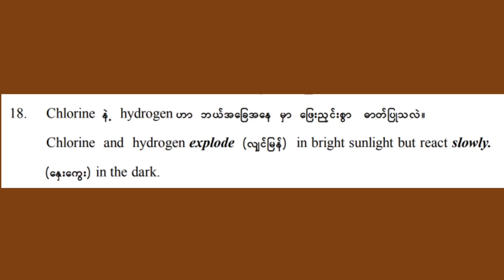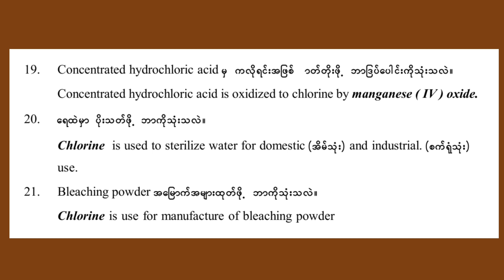Chlorine and hydrogen explode in bright sunlight but react slowly in the dark. Concentrated hydrochloric acid is oxidized to chlorine by magnesium oxide. Chlorine is used to sterilize water for domestic and industrial use.